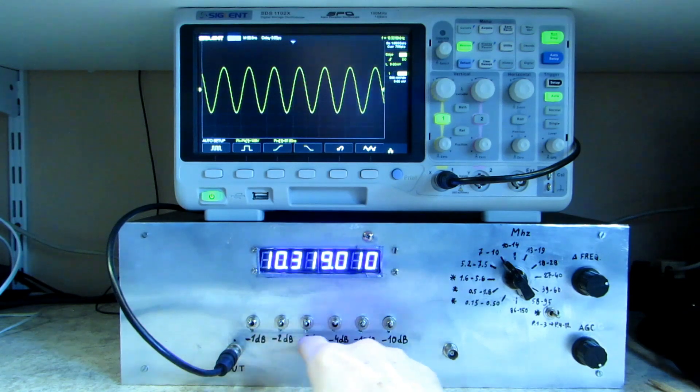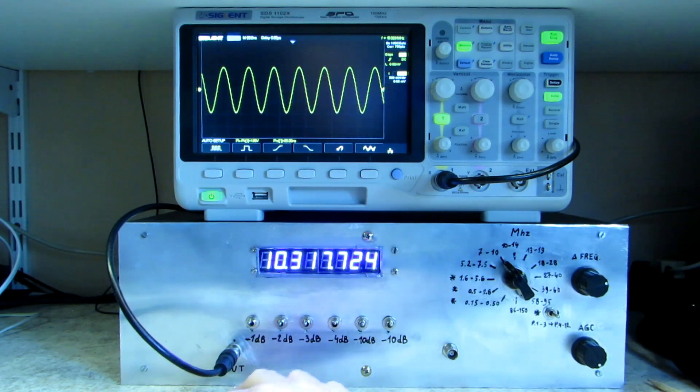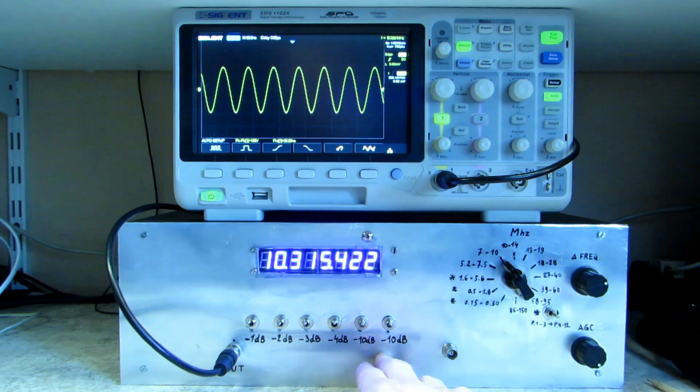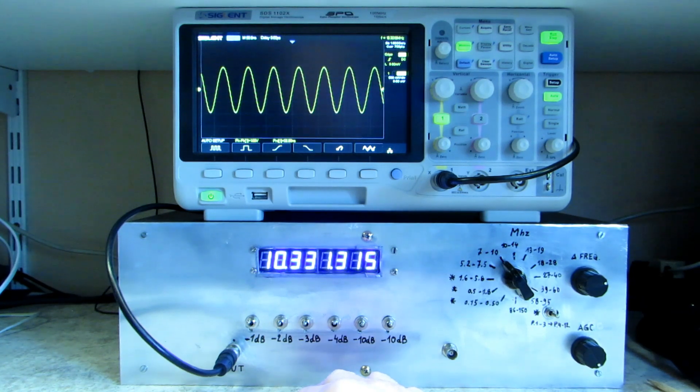These six switches work as an attenuator. From left to right we have -1 dB, -2, -3, -4, and two times -10 dB. With all possible combinations of these switches, I can weaken the signal from -1 dB to -30 dB in steps of 1 dB.